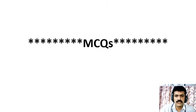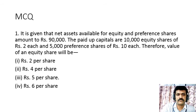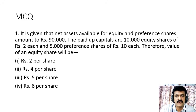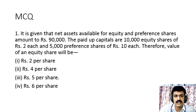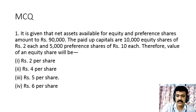Now let us discuss some multiple choice questions. Question 1: net assets available for equity and preference shares amounts to ₹90,000. Paid-up capitals are 10,000 equity shares of ₹2 each and 5,000 preference shares of ₹10 each. Find the value of an equity share. Solution: deduct preference share capital = 5,000 × ₹10 = ₹50,000. Net assets for equity = ₹90,000 − ₹50,000 = ₹40,000. Value per share = ₹40,000 ÷ 10,000 = ₹4 per share.